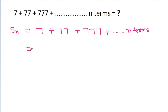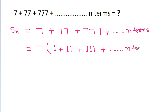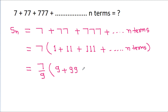Then it is 7 times (1 plus 11 plus 111 plus up to n terms), and if we multiply and divide by 9, then it will be equal to 7 by 9 times (9 plus 99 plus 999).